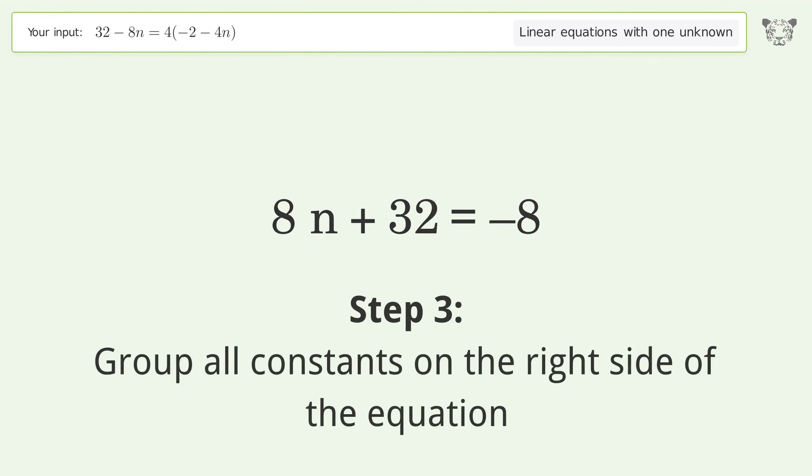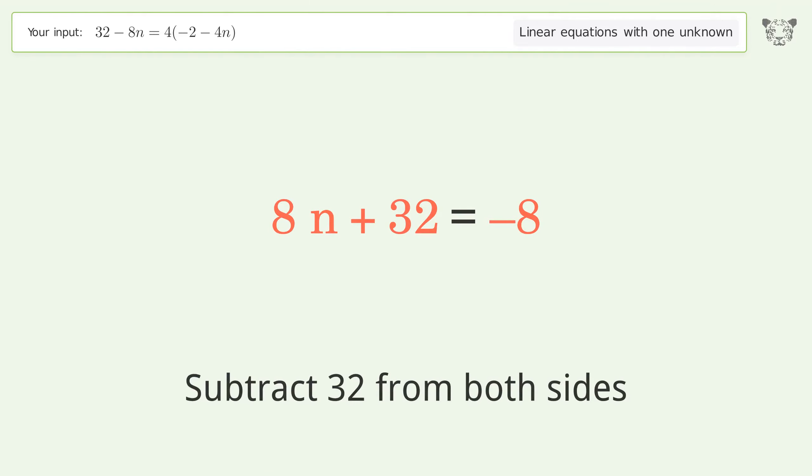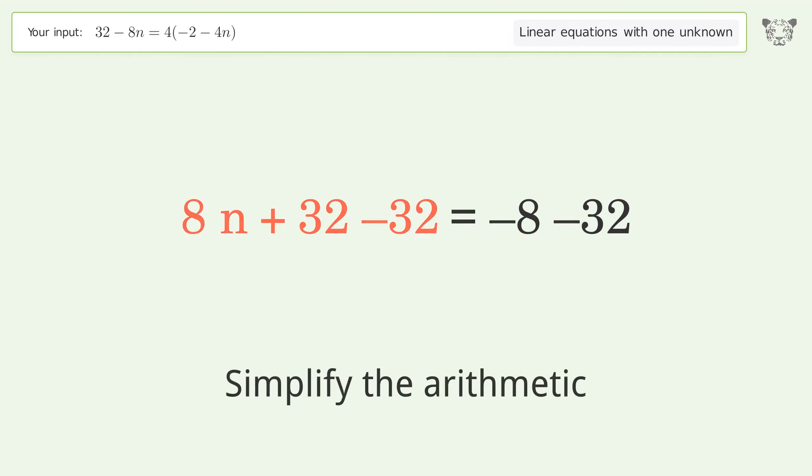Group all constants on the right side of the equation. Subtract 32 from both sides. Simplify the arithmetic.